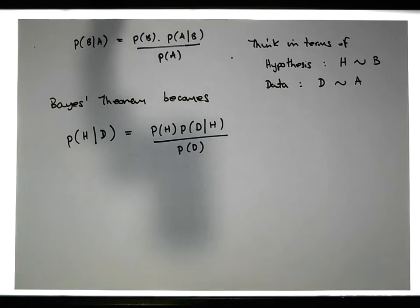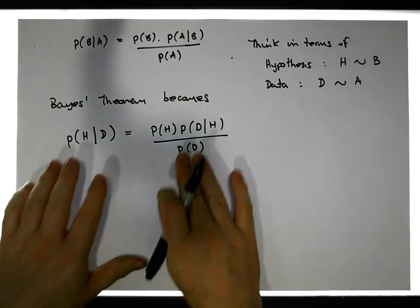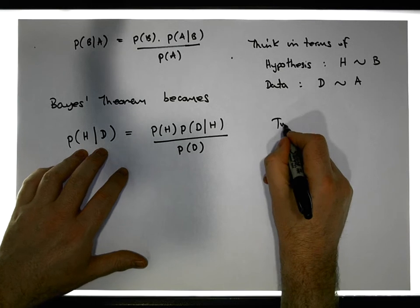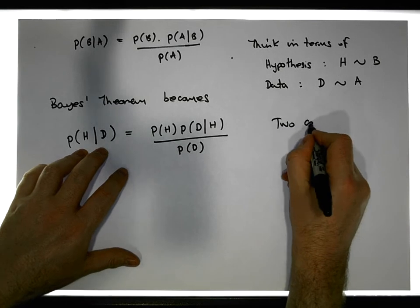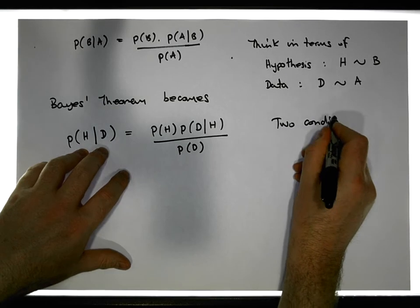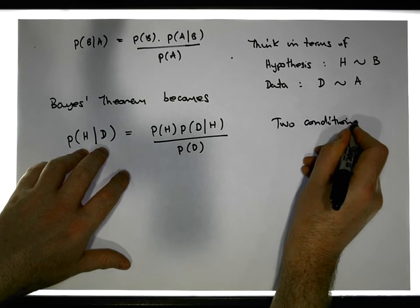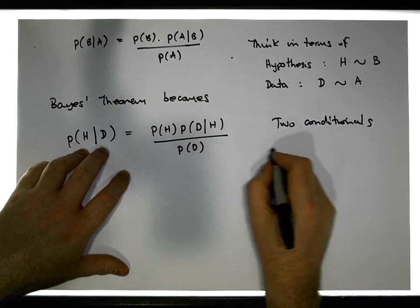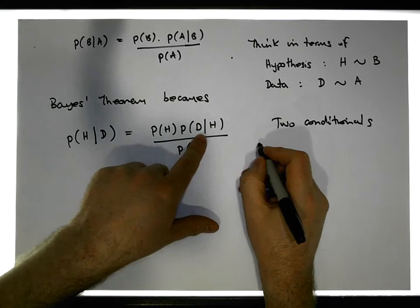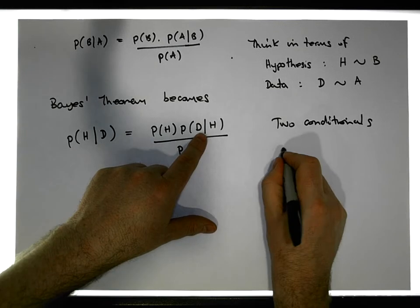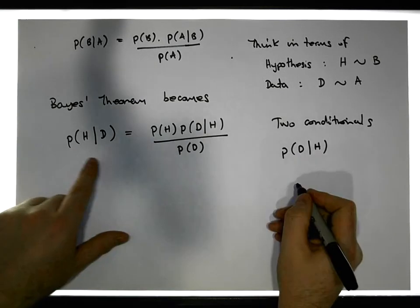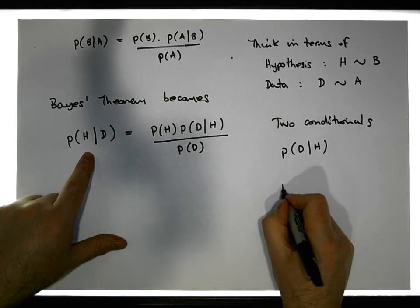So there are two conditionals here. The first is the probability of the data given the hypothesis, and the second is the probability of the hypothesis itself.